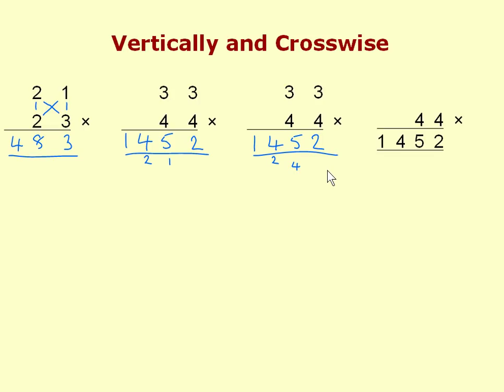This method is reversible too. Given 1,452 as the answer and 44 as one of the numbers, we can find the missing number — which is equivalent to dividing 1,452 by 44. So this simple vertical and crosswise pattern reverses to perform division and gives the answer in one line.